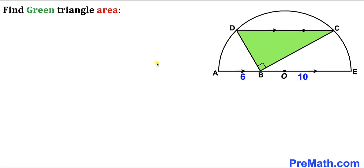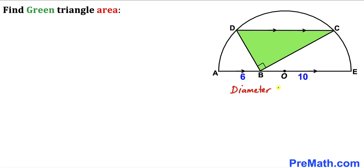Let's get started. Here's our very first step — let's make an observation. We can see that diameter AE is equal to segments AB and BE: this is 6 and this is 10. So the diameter of this semicircle is going to be 6 plus 10, which is 16. Therefore the radius of this semicircle is going to be half of this diameter, which is 8 units.